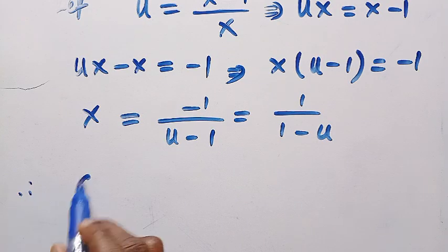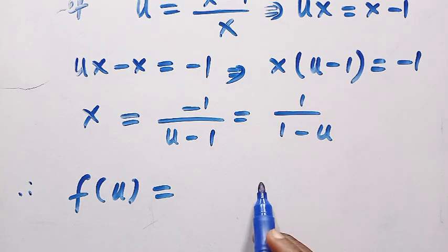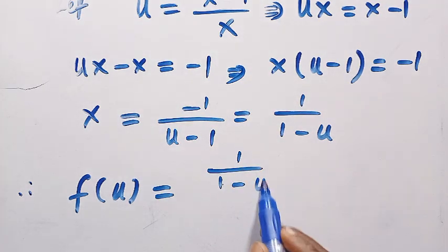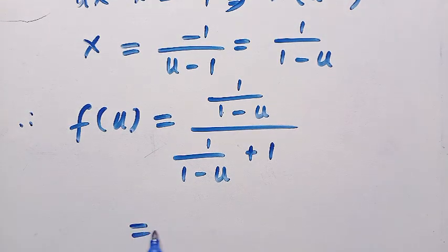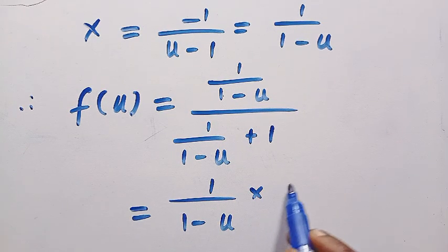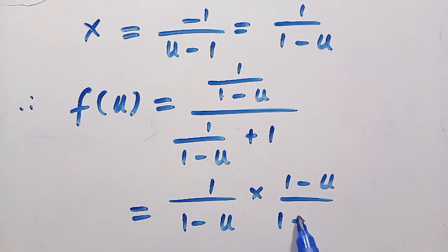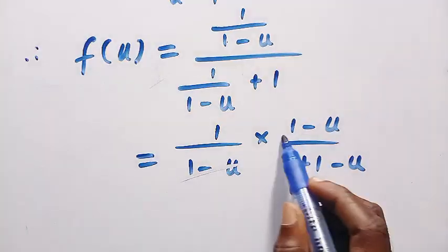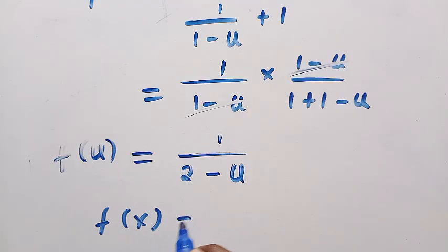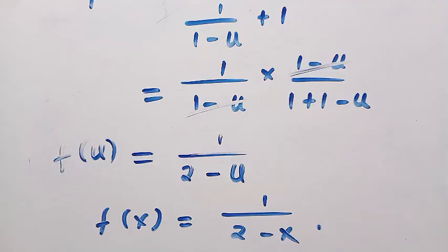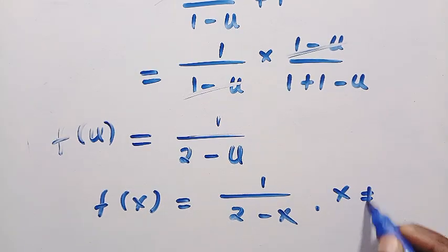Substituting back, we have f of u equals — instead of x, we place 1 divided by 1 minus u — giving us: 1 over 1 minus u, divided by 1 over 1 minus u plus 1. Expanding, taking the reciprocal and multiplying by 1 minus u, the denominator becomes 1 plus 1 minus u, which is 2 minus u. The 1 minus u terms cancel, giving f of u equals 1 divided by 2 minus u. Replacing u with x: f of x equals 1 divided by 2 minus x, with the restriction that x is not equal to 2.